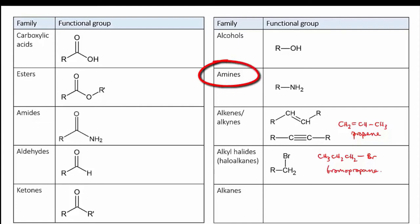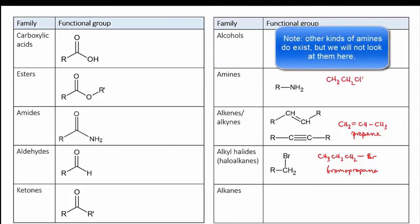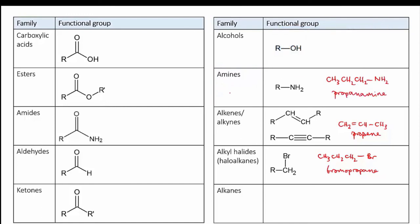Next we have the amines. Here a nitrogen and two hydrogens are added to the molecule. An example would be propanamine. These molecules have behavior in common with ammonia, from which they are derived. Ammonia is a base, a proton acceptor, and so are amines.